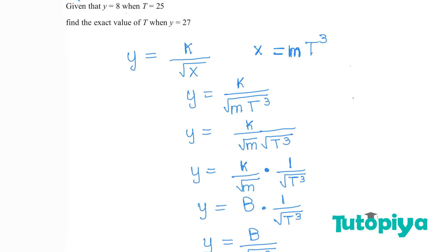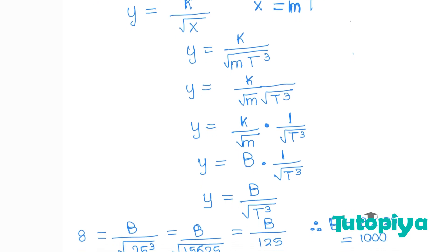But that's not the end — the question asks for the value of t when y equals 27. So we replace b with 1000 and y with 27: 27 equals 1000 over the square root of t cubed. Rearranging, the square root of t cubed equals 1000 over 27.